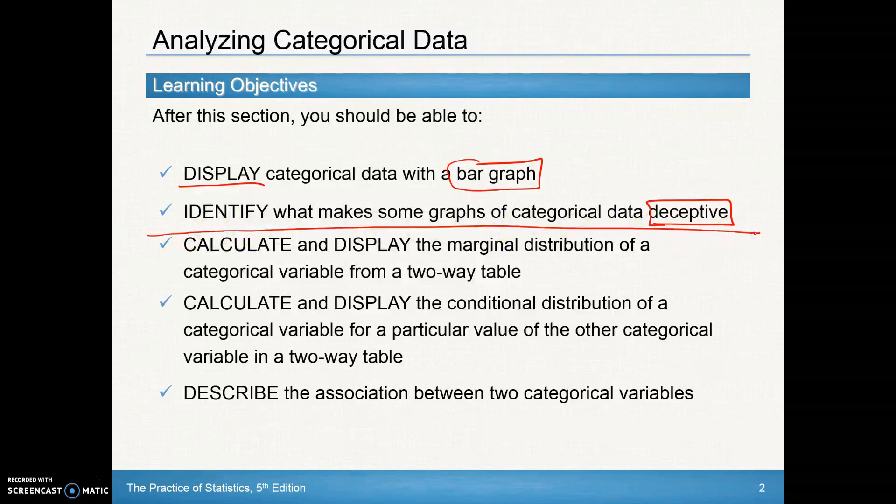Day two, we'll pick up and look at how to calculate and display marginal distributions of a categorical variable from a two-way table. We'll also look at calculating and displaying conditional distributions of a categorical variable for a particular value of the other categorical variable in a two-way table.